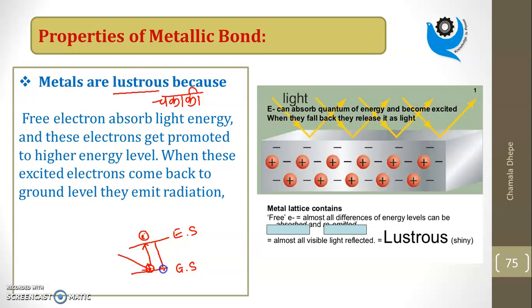When it comes back to ground state, that time it emits radiation in the form of light. This is why metals shine and appear lustrous. This is the metal block with positively charged kernels and negative valence electrons. When light falls on them, these valence electrons get excited, and when they return to ground state, they emit radiation.